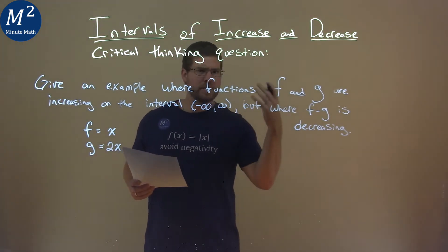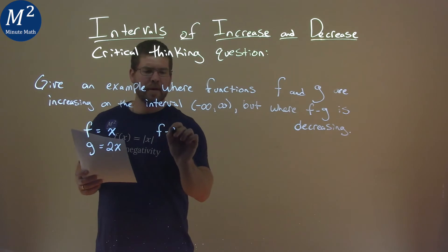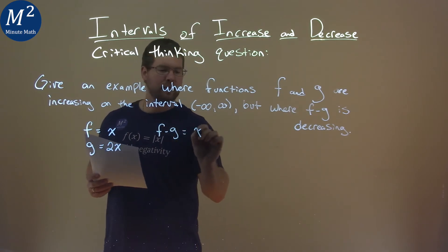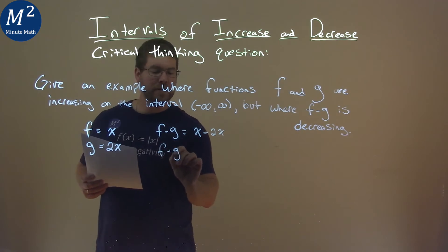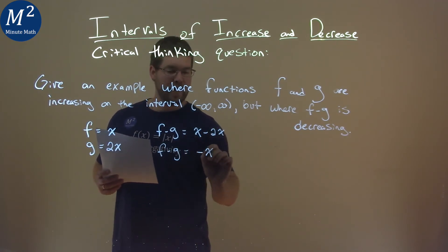What happens when we have f minus g? f minus g is equal to x minus 2x. Simplify that, f minus g, x minus 2x is negative x.